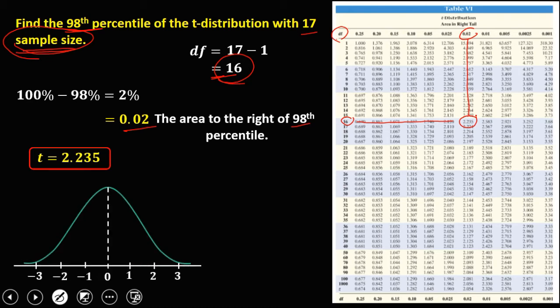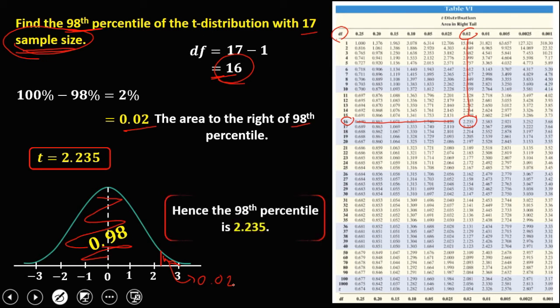Plotting this on a curve: 2.235 is the t-value. The area to the left is 0.98, and the area to the right is 0.02. Therefore, the 98th percentile is 2.235.